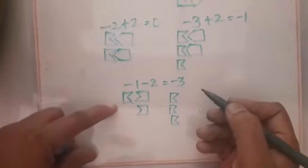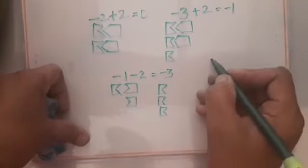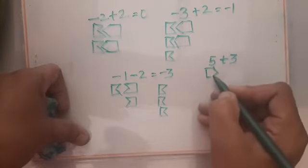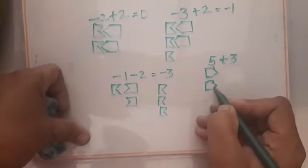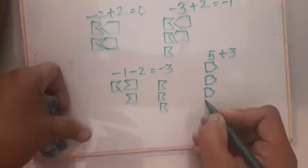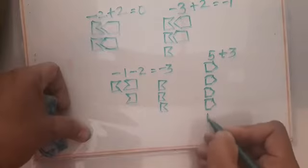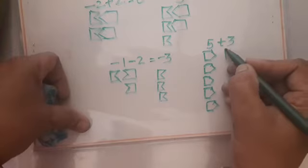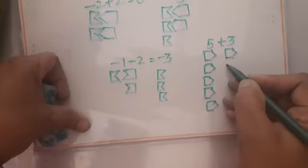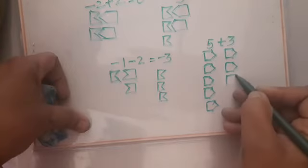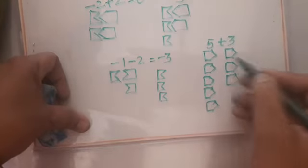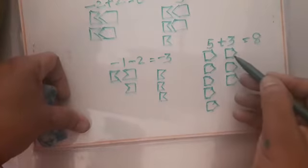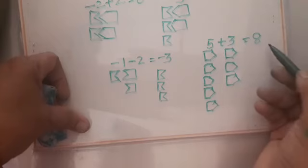Let us say it is given 5 plus 3. That means you have five plus-type symbols and three more plus-type symbols. Will they get interlocked? No. So what is the answer? 8 — and you know that 5 plus 3 is 8.